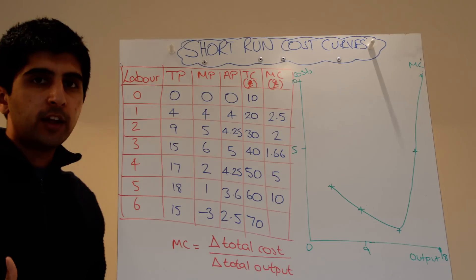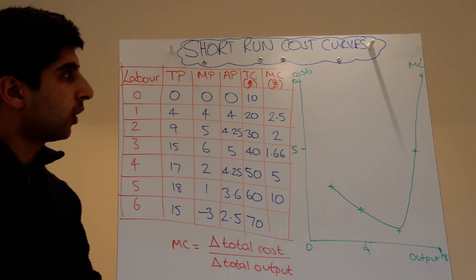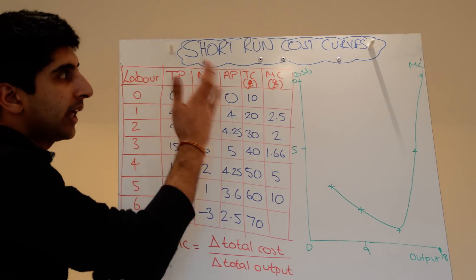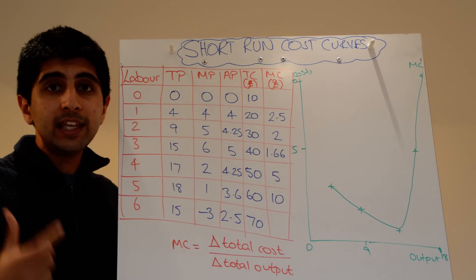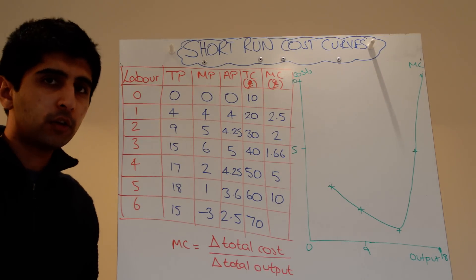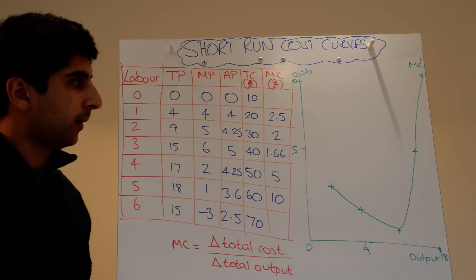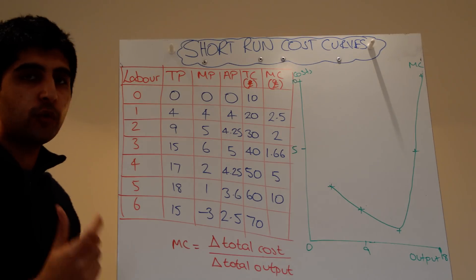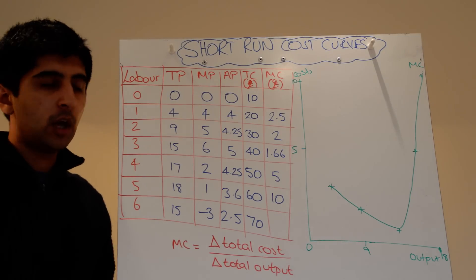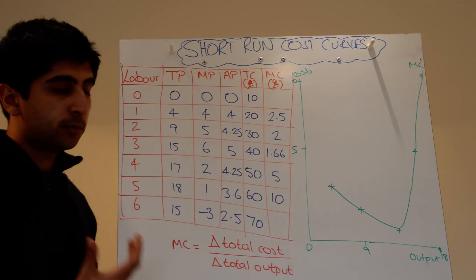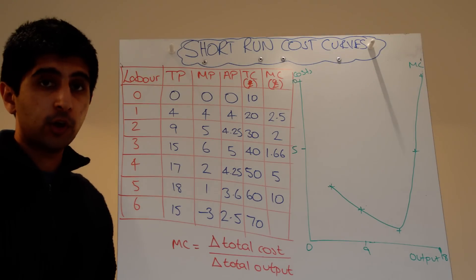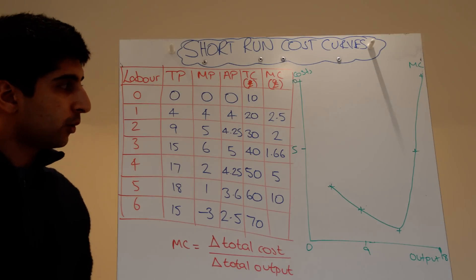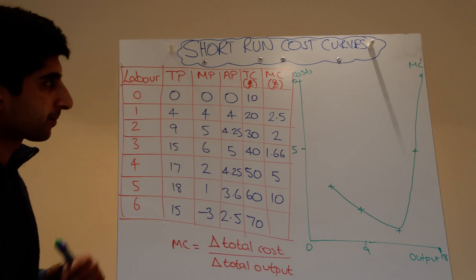Now I want to put everything we've learnt together as one and actually understand what the key short run cost curves are for a firm. We've understood the law of diminishing returns, we've understood the difference between fixed and variable costs. Let's put it all together now.